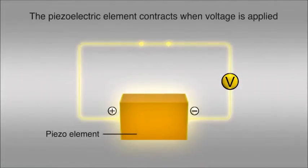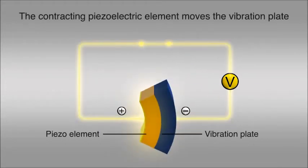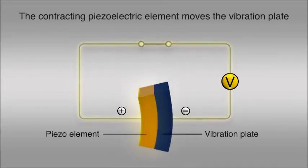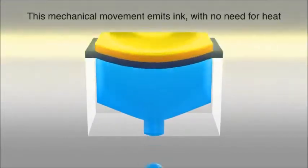When voltage is applied to a piezoelectric element, it contracts. A piezoelectric element and a vibration plate form a set. The contracting piezoelectric element moves the vibration plate to generate an inkjet mechanically with no need for heating.